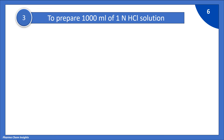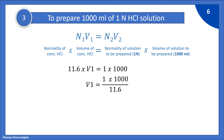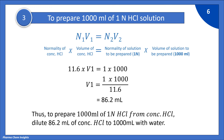Another example: to prepare 1000 ml of 1 normal HCl solution. Using the normality equation N1V1 = N2V2: 11.6 × V1 = 1 × 1000, so V1 = (1 × 1000) / 11.6. By calculating, we get 86.2 ml. Thus, to prepare 1000 ml of 1 normal HCl from concentrated HCl, dilute 86.2 ml of concentrated HCl to 1000 ml with water.